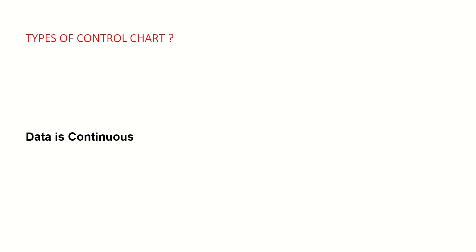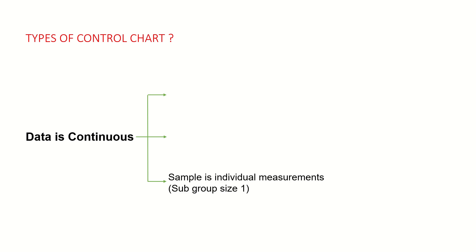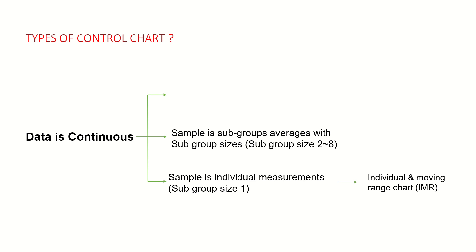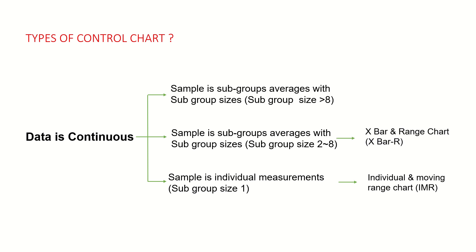There are different types of control charts when your data is continuous, and there is a concept of subgroup size. If your subgroup size is 1, you will use the Individual Moving Range (IMR) chart. If your subgroup size or the average subgroup size is from 2 to 8, you will use the X-bar R control chart. And if your subgroup size is greater than 8, you will use the X-bar S control chart. In today's video I am going to create all three types of control charts in Minitab.